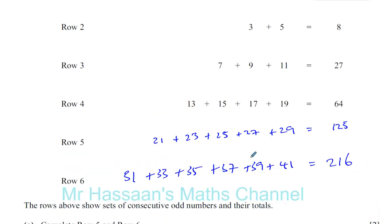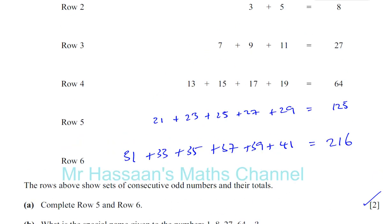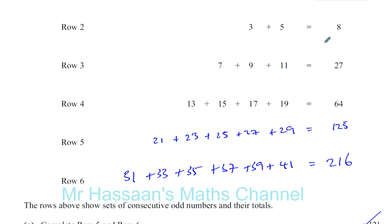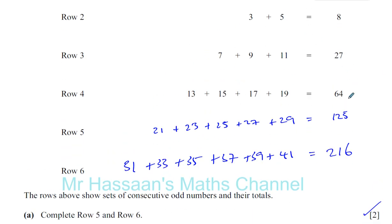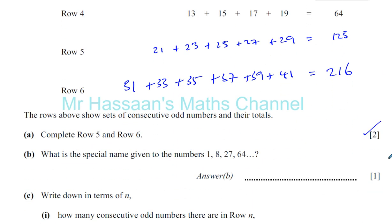So that is row 5 and 6 completed. What is the special name given to the numbers 1, 8, 27, 64 and so on? As I mentioned, those are called the cube numbers.